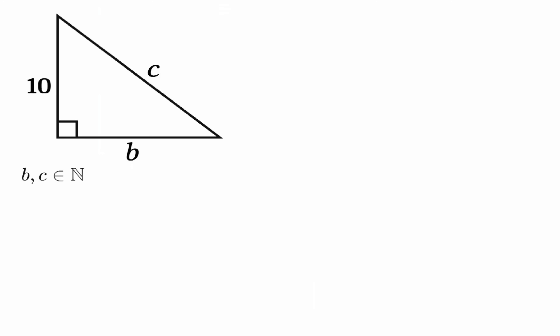Hello everybody and welcome back to another math learning video. Today I brought you guys this geometry problem where we are given a right triangle with one known side length. This is our a value of 10, and what we need to do is find the two missing values to make this right triangle work.